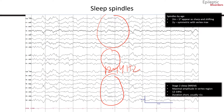Sleep spindles first appear as sharp and shifting hemispheric predominance at the age of two months. By the age of two years, they are symmetric and vertex maximum.